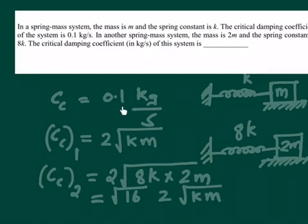Now what happens, this is square root of 16 times 2 square root k m. If you observe carefully, this value is equal to 0.1 kg per second as given in the problem. So the critical damping coefficient of the second system will be 4 times 0.1.